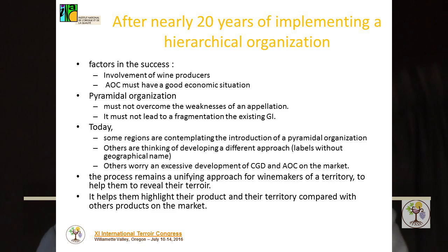Today, some regions are contemplating the introduction of a pyramidal organization. Others are seeking to develop a different approach using labels that highlight their terroir without using a geographic name. Others worry about excessive development of CGDs and AOCs on the market. The process can evolve in the coming years. It remains a unifying approach for winemakers of a territory, helping them reveal their terroir and highlight their products compared to others in the market.